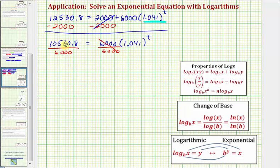Now what we don't want to do here on the left is find this quotient and round this value, and then perform another calculation and round again, because that would give us too much of an error. So we're going to leave the left side as this quotient. So we have 10,530.8 divided by 6,000 equals 1.041 raised to the power of T.